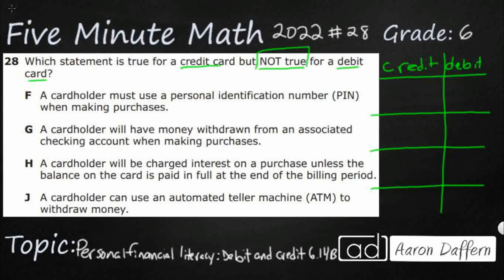Let's get started with option F: a cardholder must use a personal identification number, a PIN number, when making purchases.